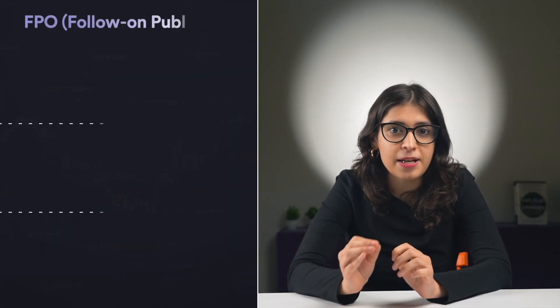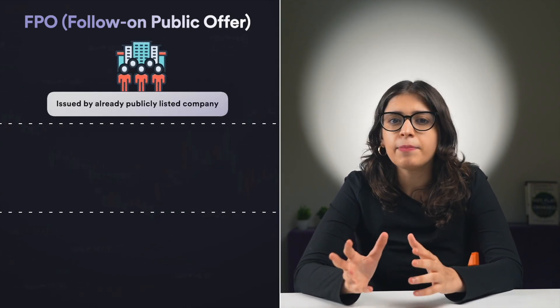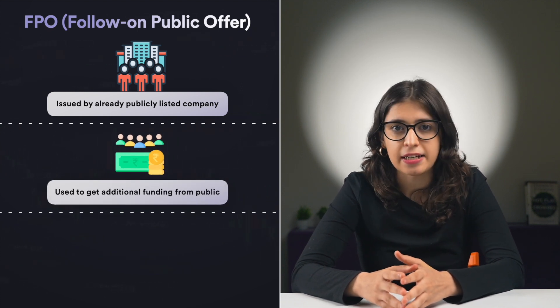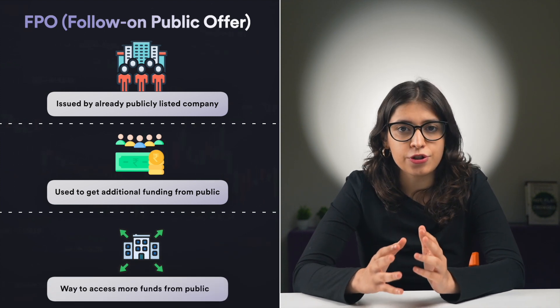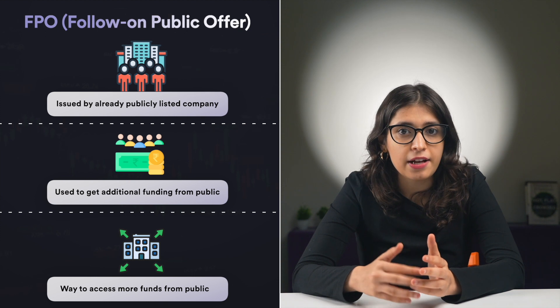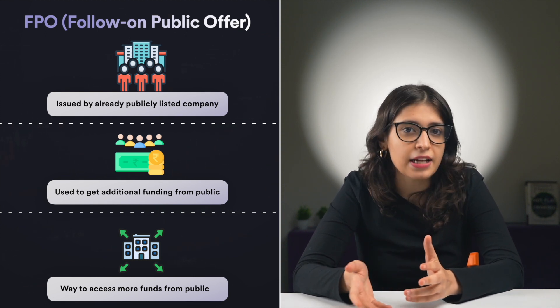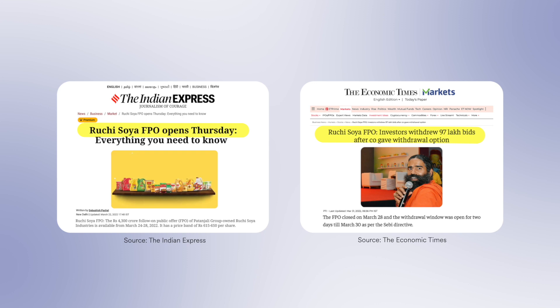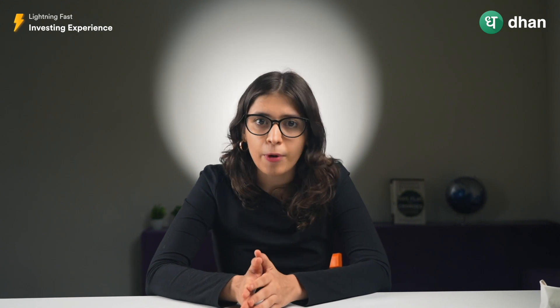Another related concept is the Follow-on Public Offer, or FPO. If a company is already publicly traded and wants to issue additional shares to raise funds, it can do so through an FPO. Companies raise additional funding through FPOs for many reasons, such as expansion, capacity building, or debt reduction. For example, Ruchi Soya Industries Limited, a Patanjali group company, issued an FPO in March 2022 at Rs. 650. The main reason was to reduce the promoter's holding for regulatory compliance, and the company used the funds to repay debt and become debt-free. The FPO procedure is similar to the IPO, where a prospectus is issued for the general public to apply for additional shares.